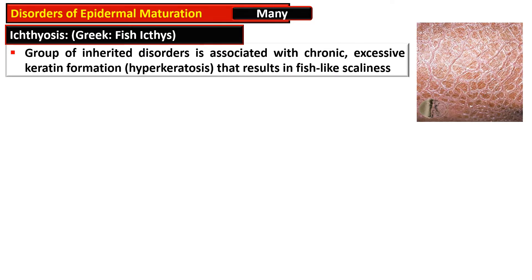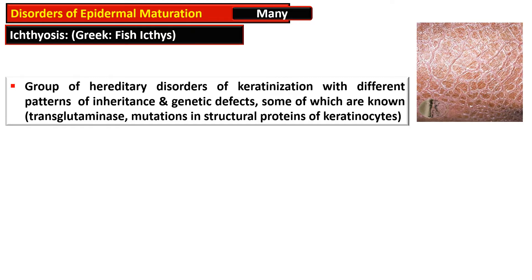Ichthyosis is derived from the Greek word 'ichthais' meaning fish. This is a group of inherited disorders — some are also acquired — associated with chronic excessive keratin formation that results in hyperkeratosis. Morphologically on the skin, it results in fish-like scale formation. In other words, this is a group of hereditary disorders of keratinization with different patterns of inheritance and genetic defects, some of which are known.